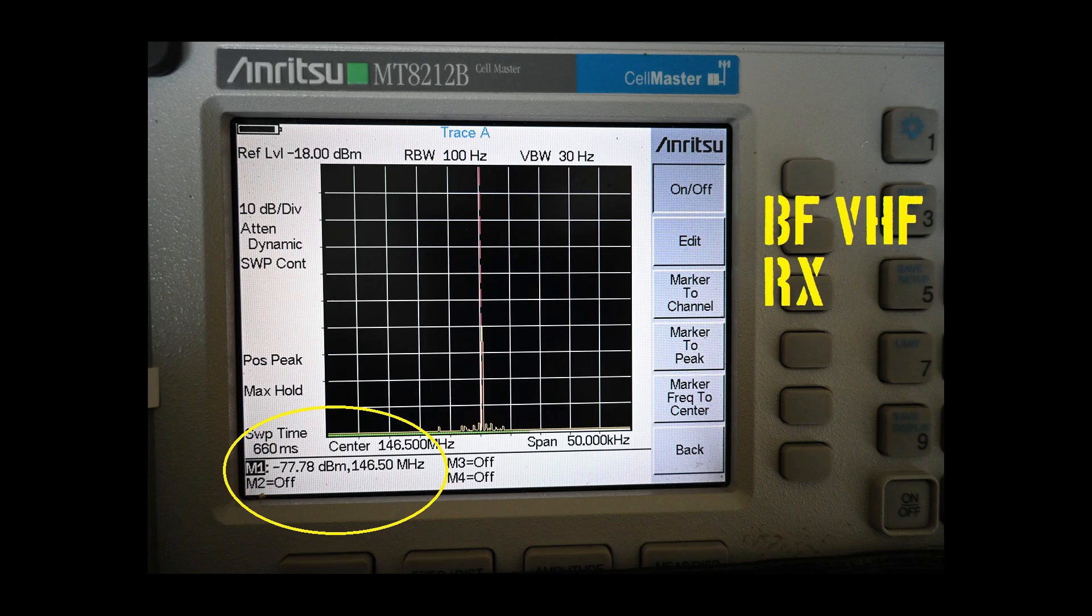We have a small signal generator located 50 yards away, producing a 10-second carrier, and this is the received signal on the spectrum analyzer. First up is our Baofeng antenna, and our test signal is minus 77.8 decibel milliwatts.